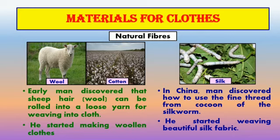Materials for clothes. Clothes can be made from different types of fibers. There are two types of fibers: natural fibers and synthetic fibers. The natural fibers are obtained from natural sources like plants and animals. Cotton, wool and silk are examples of natural fibers. Early man discovered that sheep hair can be rolled into a loose yarn for weaving into cloth, and hence started to make woolen clothes. He also learned to make fiber from plants like cotton.